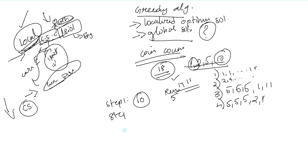Step 2: the next largest coin is 5. So 5 is our balance. If we return, the remaining balance is 8 minus 5, so the remaining balance is 3.